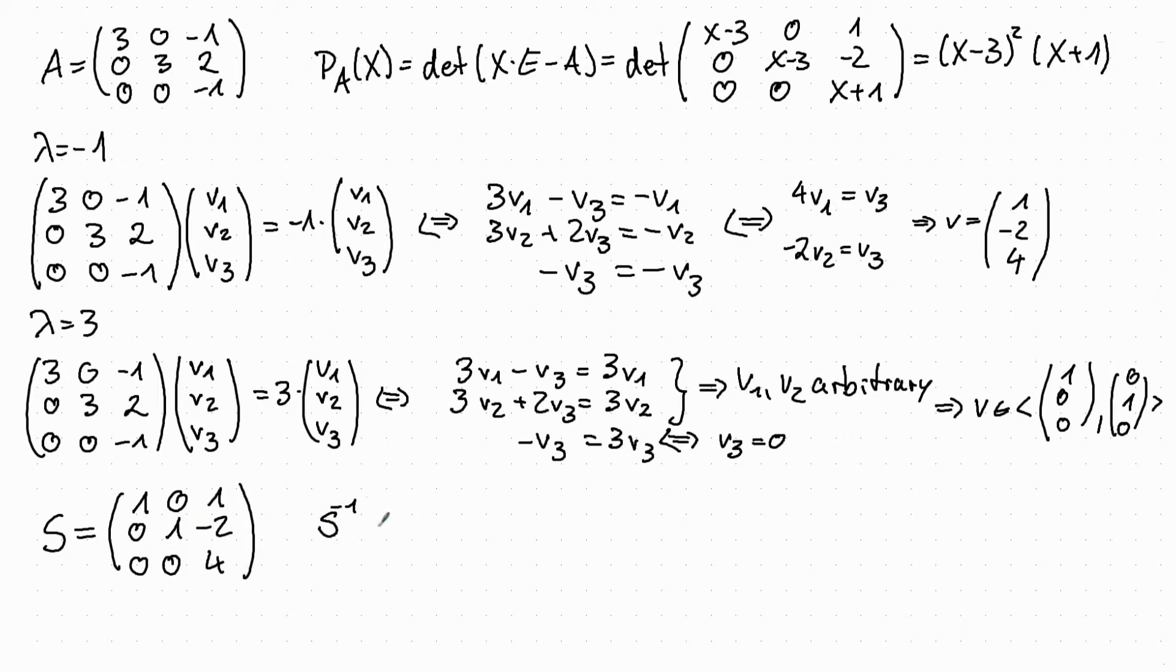And then we have to compute the inverse matrix, for example by Gauss algorithm. This is 1, 0, minus 1 over 4, 0, 1, 1 over 2, 0, 0, 1 over 4.